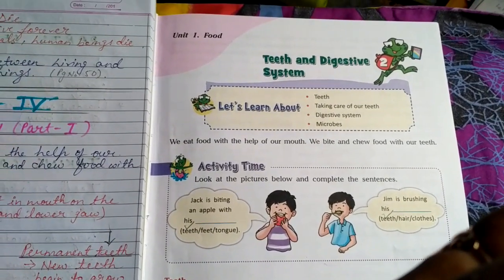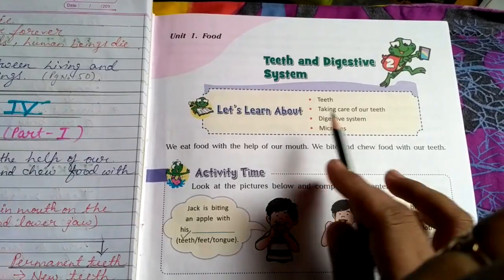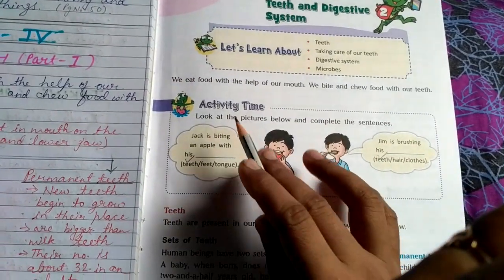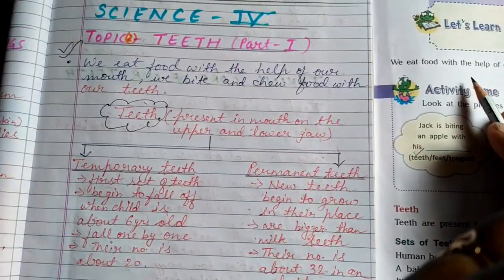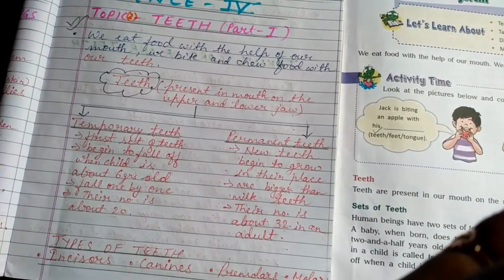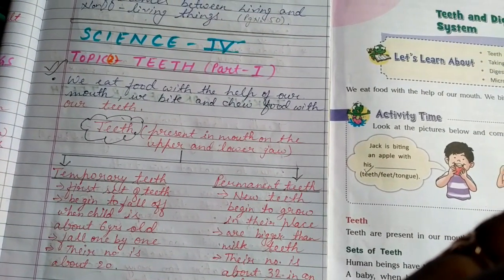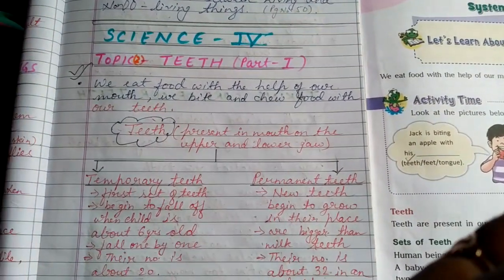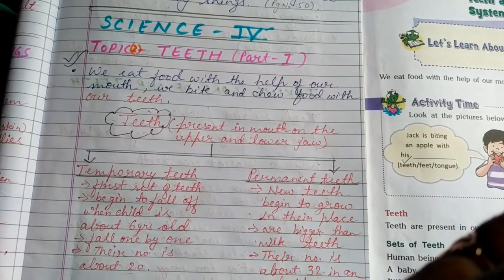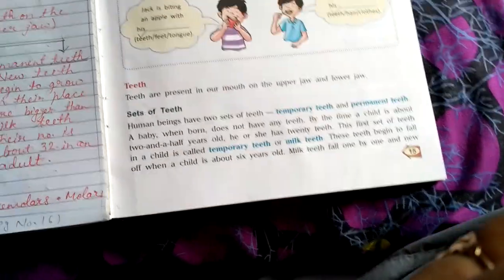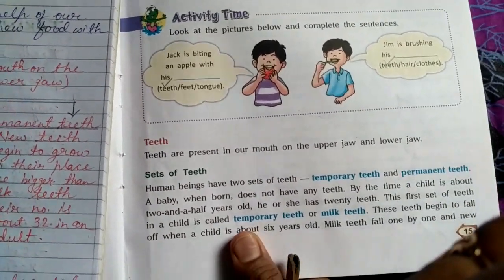Now let's start the revision. This chapter is about Teeth and Digestive System. The very first thing is that we eat food with the help of our mouth — we bite and chew food with our teeth. Teeth are present inside our mouth on the upper and lower jaw. Human beings have two sets of teeth: temporary teeth and permanent teeth.